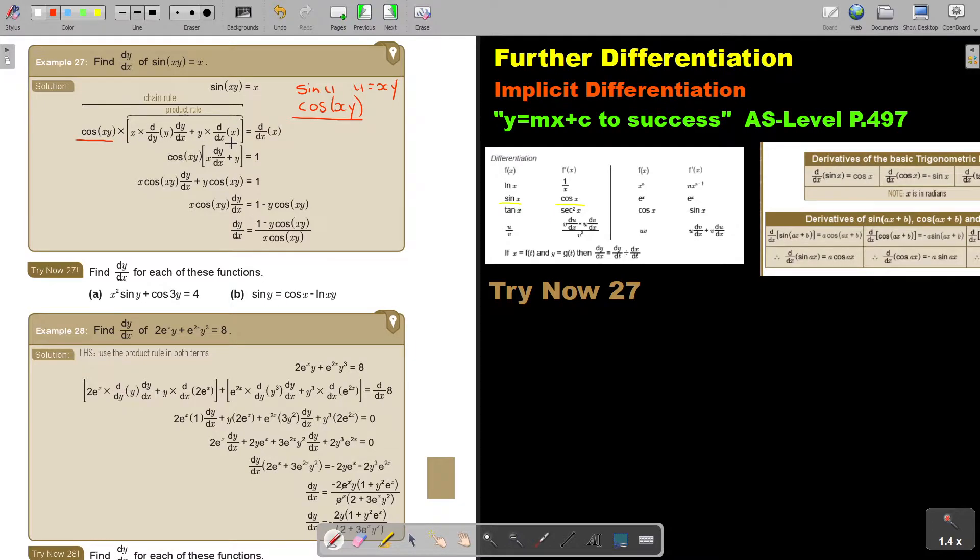Then I differentiate X. Now I just simplify. This will become 1, so it will just be X dy/dx. Then multiply, this is Y, and this is becoming 1 again. I multiply in and get my two terms there. I'm looking for the term containing dy/dx, so keep it on this side, take the other one over, then divide by that, and there is your final answer.